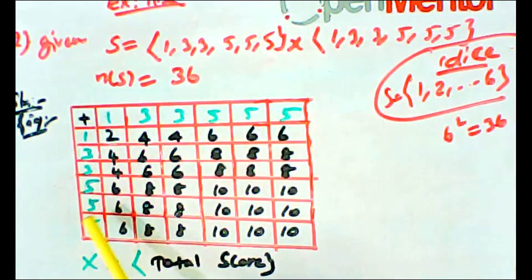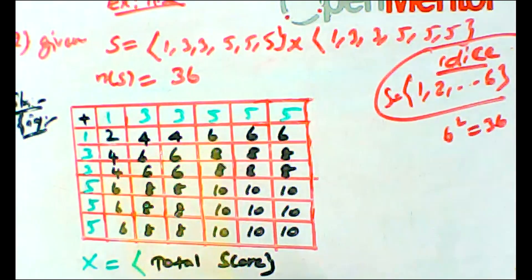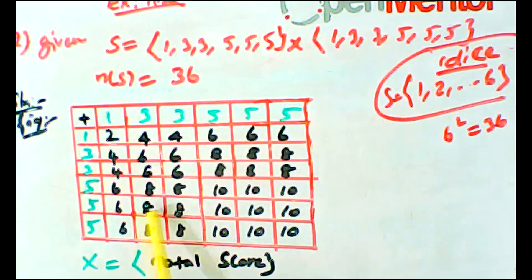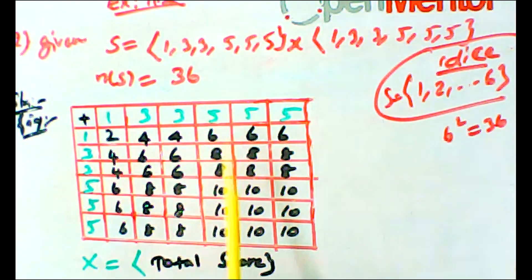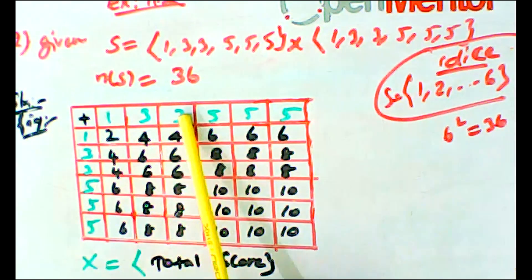Now look at the outcomes starting with 5: (5,1) gives score 6, (5,3) gives score 8, (5,3) gives score 8, (5,5) gives score 10, and (5,5) gives score 10.